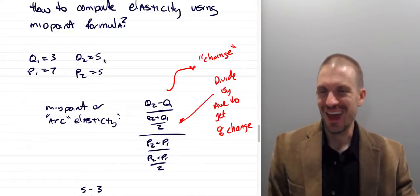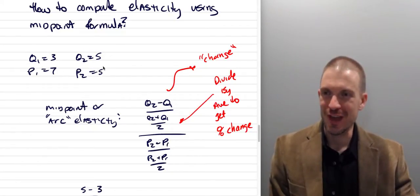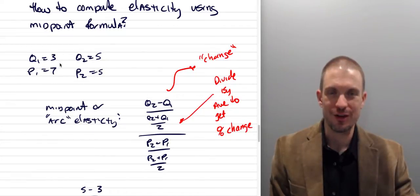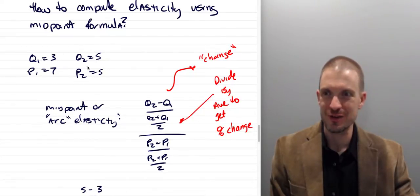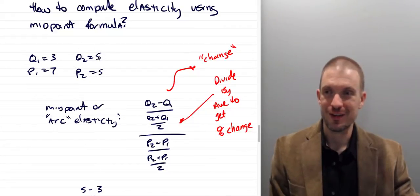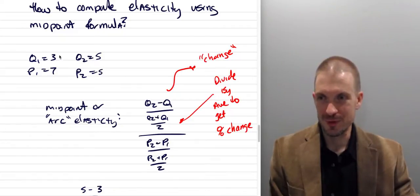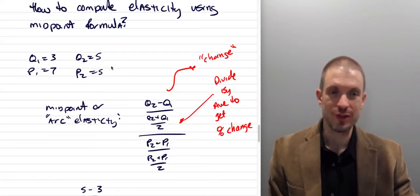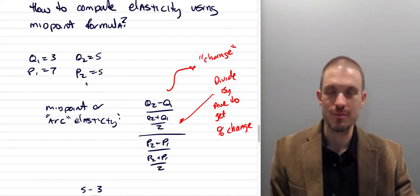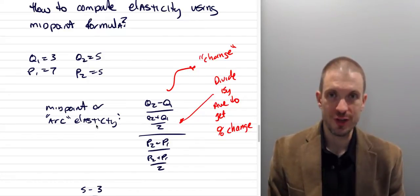If you're thinking carefully, you can see that with points (5,5) and (3,7), this demand curve must be price equals 10 minus Q, which means 5 is the midpoint quantity, meaning the price elasticity of demand at the midpoint has to be one. The price elasticity at the point (3,7) was computed in my other video. So let's compute it halfway between these two points — that's the midpoint formula, sometimes called the arc elasticity.